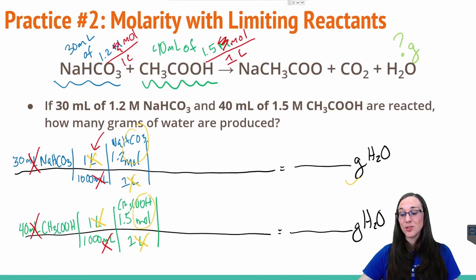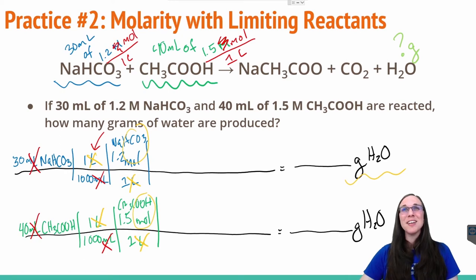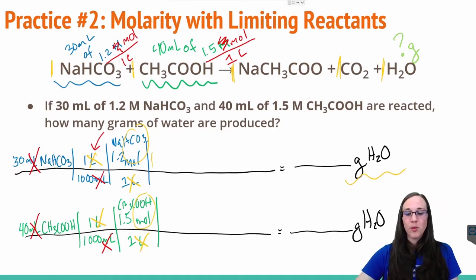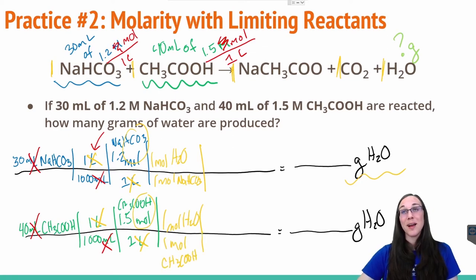We're still trying to get to grams of a product, so we need to convert a chemical to a different chemical using a mole ratio. Looking back at our balanced equation, we see that this is an entirely one-to-one-to-one-to-one balanced equation — everything is just one to one. So we plug in one mole of water equivalent to one mole of baking soda, and one mole of water equivalent to one mole of acetic acid, according to our balanced equation.